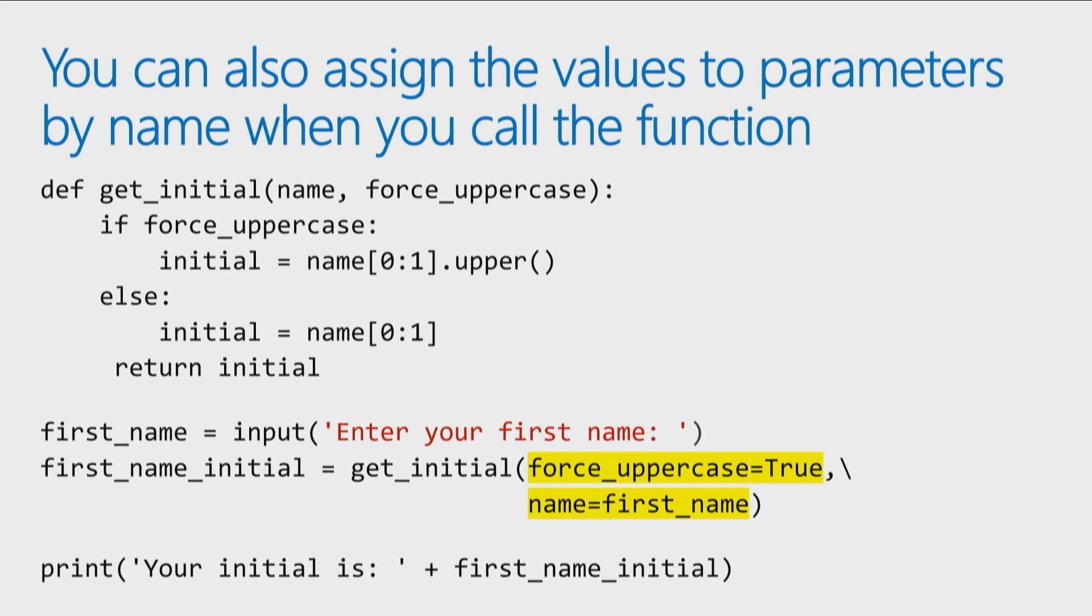That was only a half-truth. If you're using what we call positional notation, meaning the position of the parameters lets the function know which parameters go with which values, that's what you have to do. But there's something else called named notation.